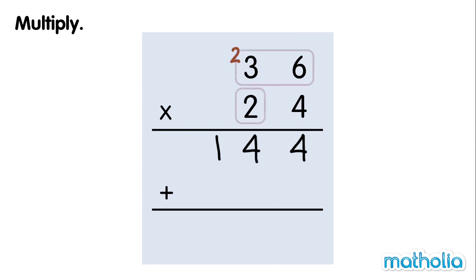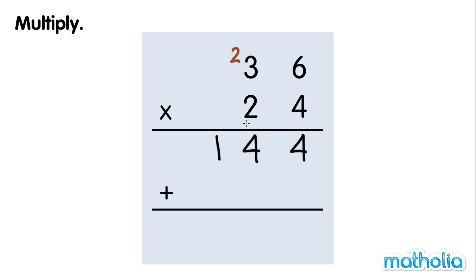Now we multiply 36 by 20. Start by multiplying the ones. 20 times 6 ones equals 120 ones. 120 ones equals 12 tens. We can regroup 12 tens into 1 hundred and 2 tens.